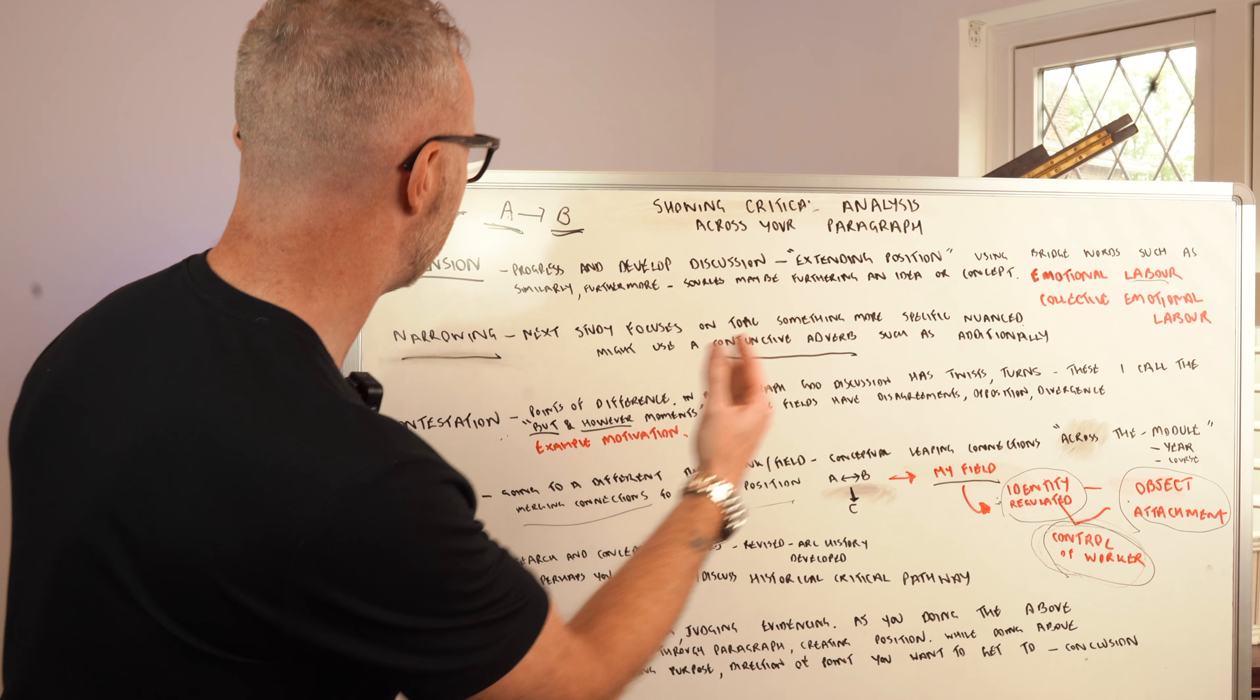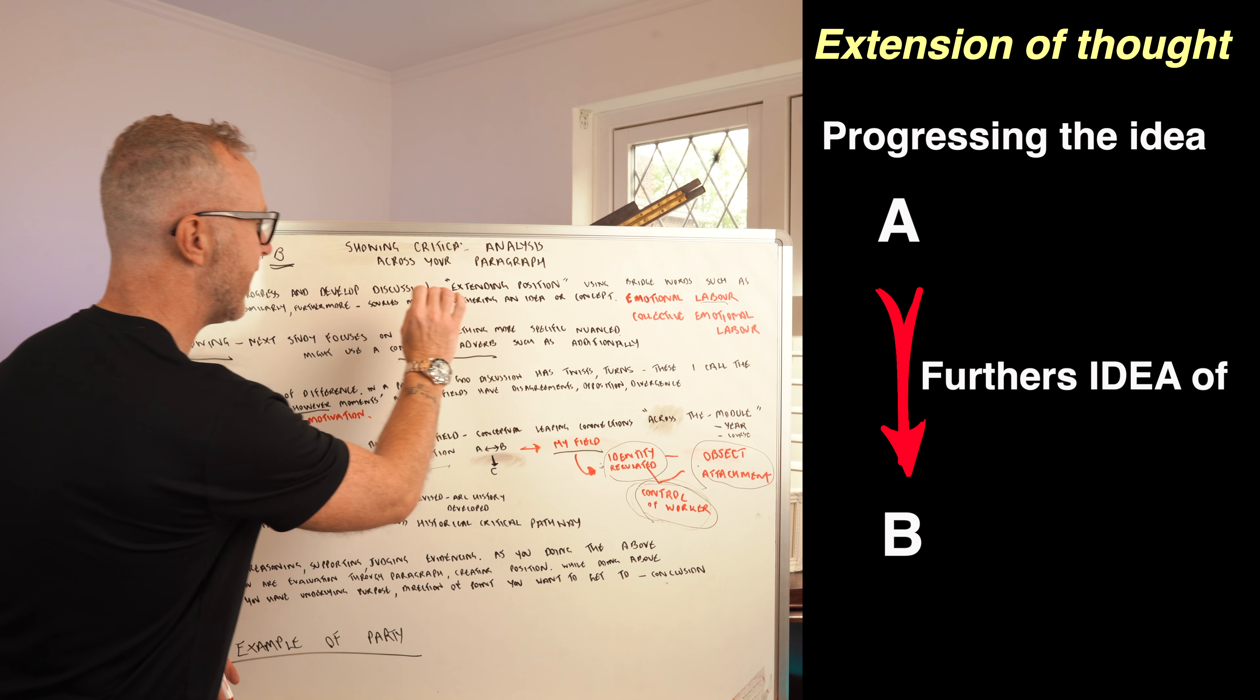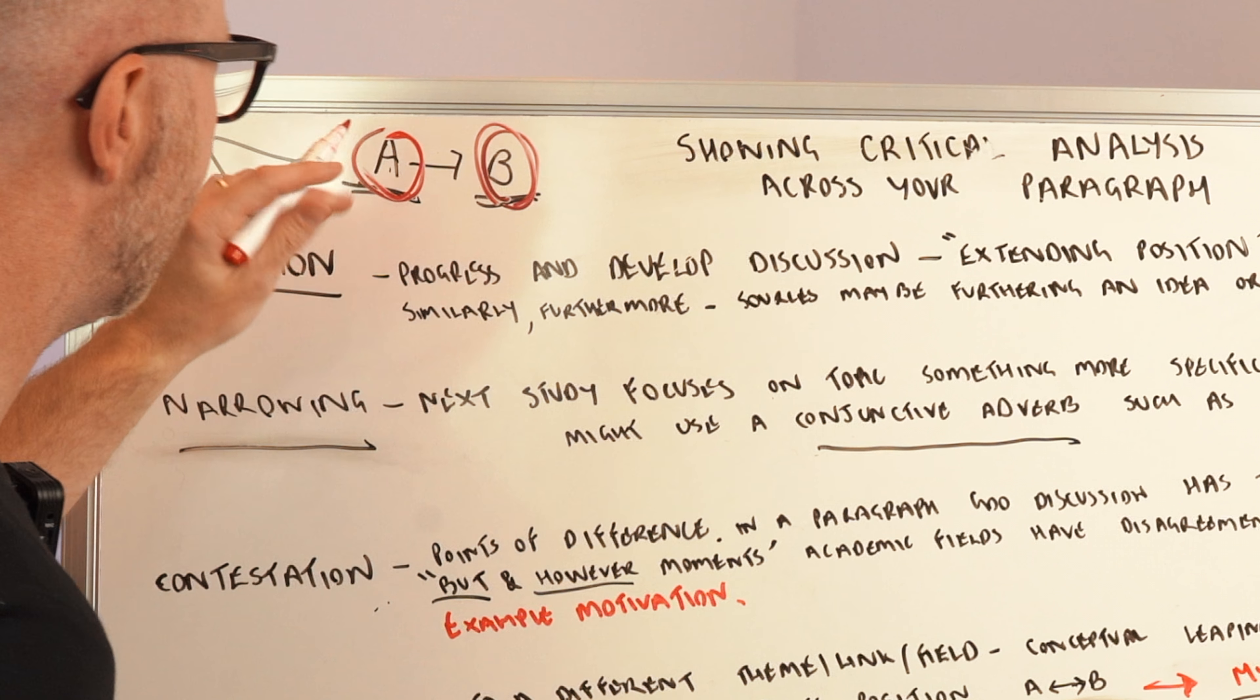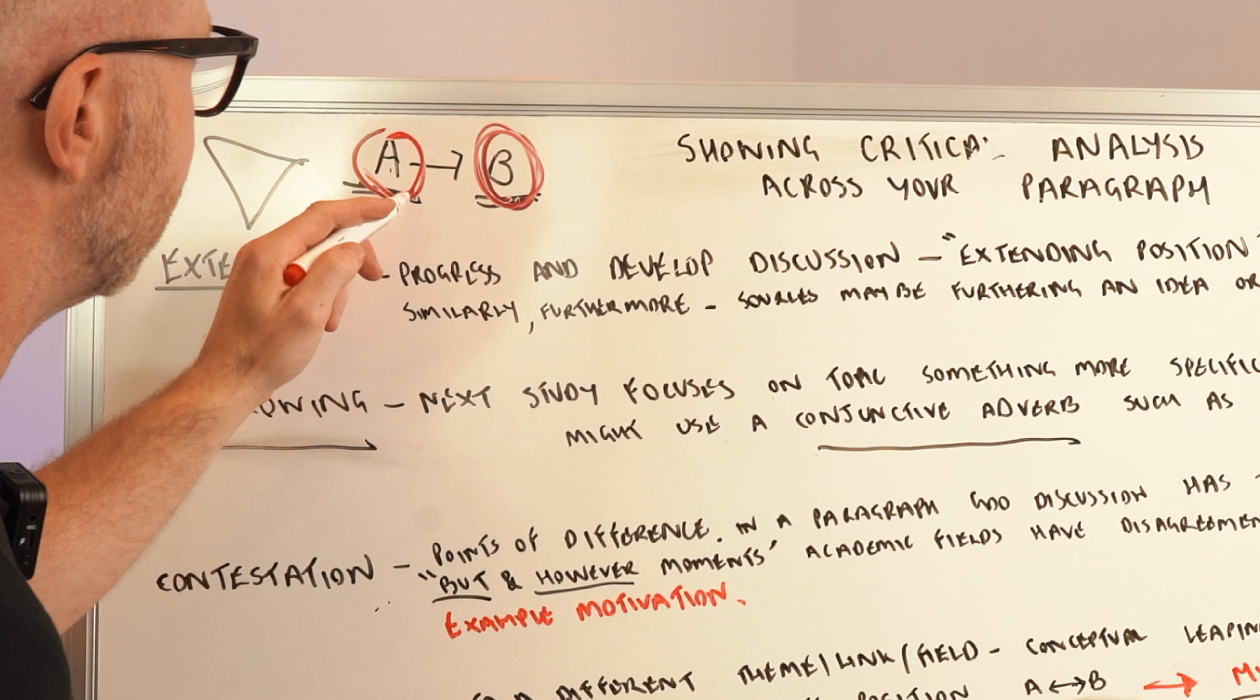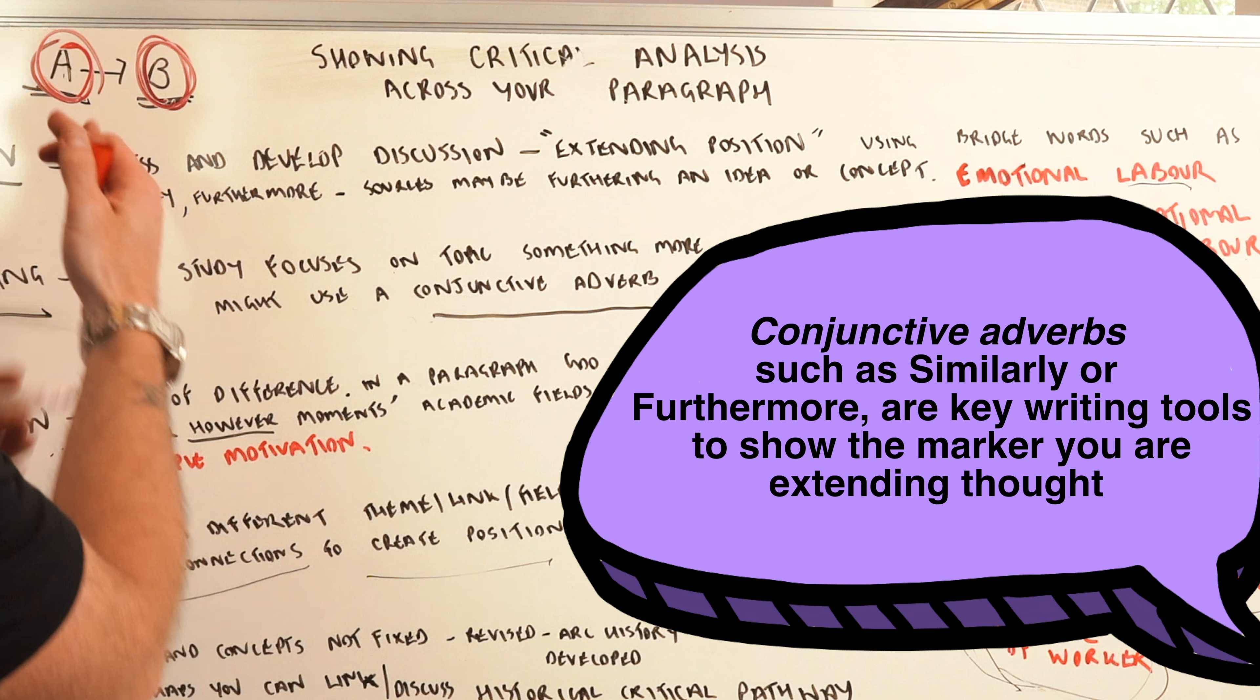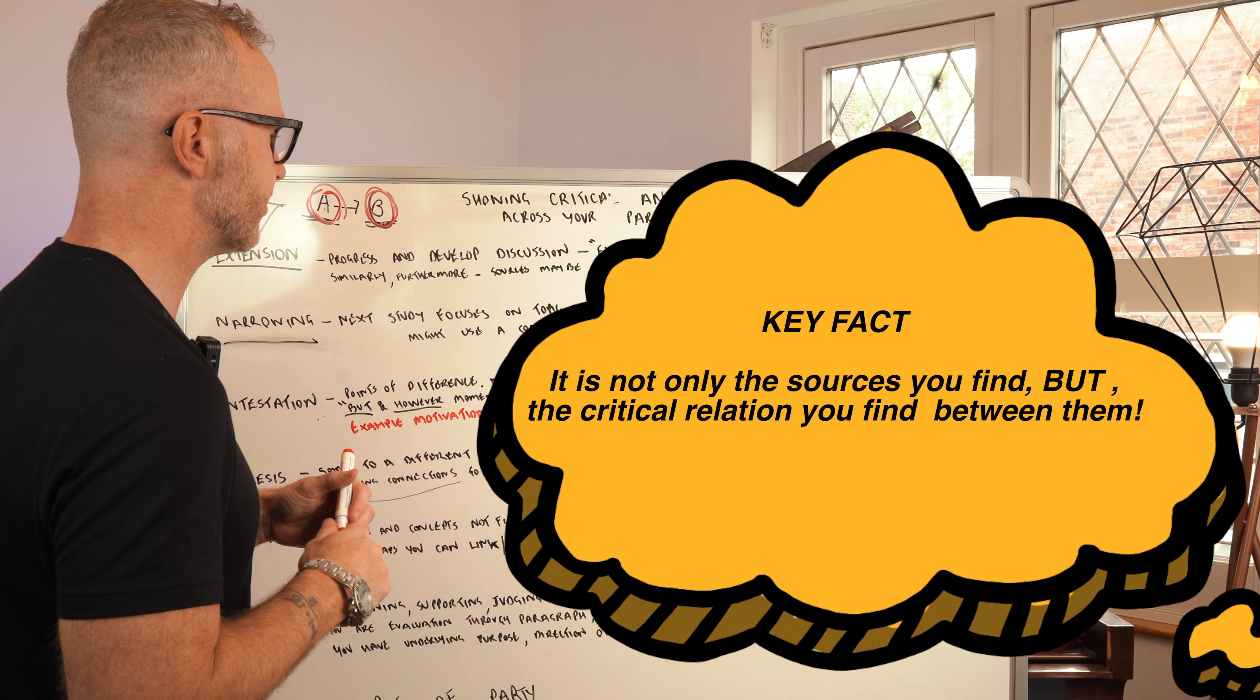Let's start with the first type of critical analysis: extension. Within this there's a progression and development of discussion. You're extending a position. Perhaps you've got thinker A and thinker B or source A and source B, and there's a furthering, an extending of the idea that B is giving to the thought of A. We're using bridge words such as similarly or furthermore to show this connection development, this critical connection that B is furthering the idea.